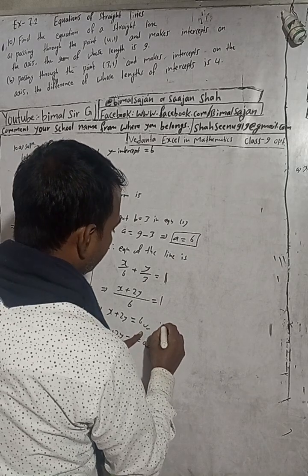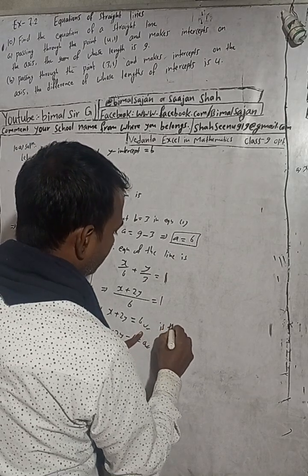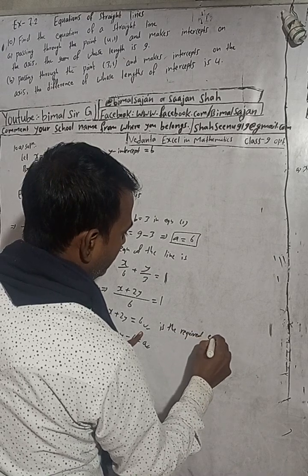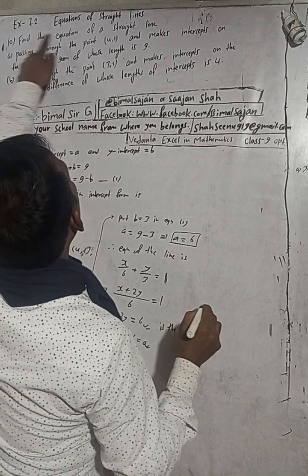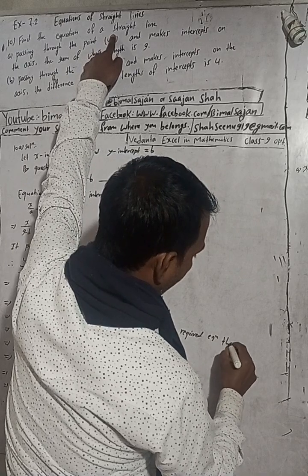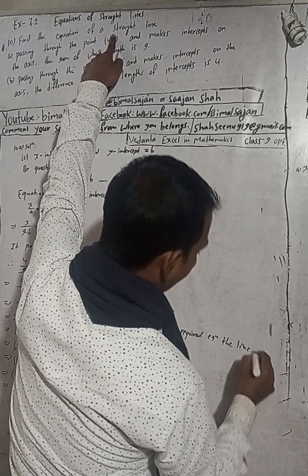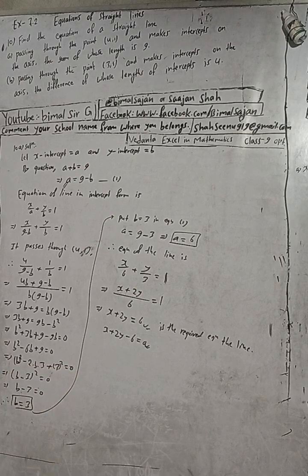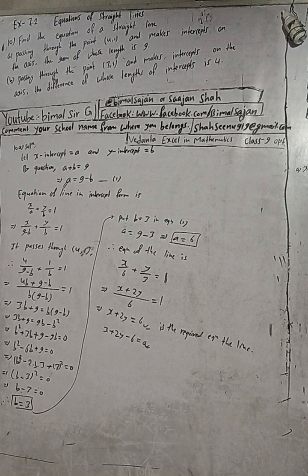So the required equation of the line is x + 2y = 6, or equivalently x + 2y - 6 = 0. Both are correct answers; whichever you prefer, you can write that in your book.